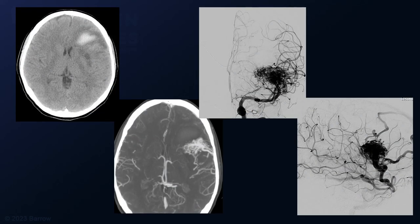Her CT scan demonstrates this subacute hematoma in the frontal lobe. The CT angiogram shows an adjacent AVM at the posterior margin of the clot. The angiograms to the right show a tight, compact nidus of AVM fed by a leash of lenticular striate arteries that go to the tip of this conical AVM.